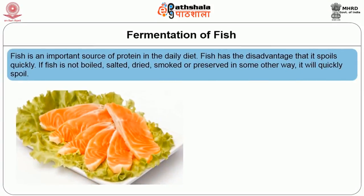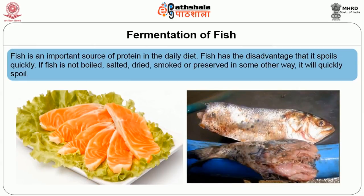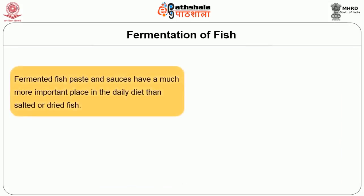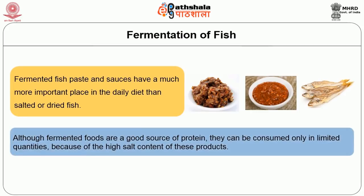Fish is an important source of protein in a daily diet, mainly in coastal areas. However, fish has the disadvantage that it spoils quickly. If the fish is not boiled, salted, dried, smoked or preserved in some other way, it will quickly spoil. Fermented fish paste and sauce have a much more important place in the daily diet rather than salted or dried fish. Although fermented foods are a good source of protein, they can be consumed only in limited quantities because of the high salt content of these products.